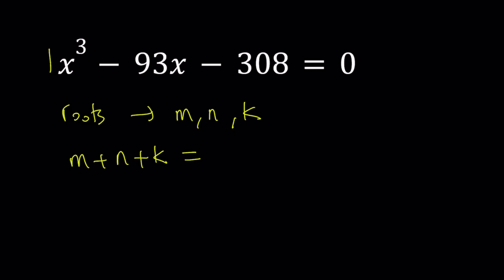In this case, there is no x squared, which is real cool. I'll talk about that in a little bit. So it's 0. There is no x squared, it's 0x squared. So m plus n plus k is equal to 0. That's nice.